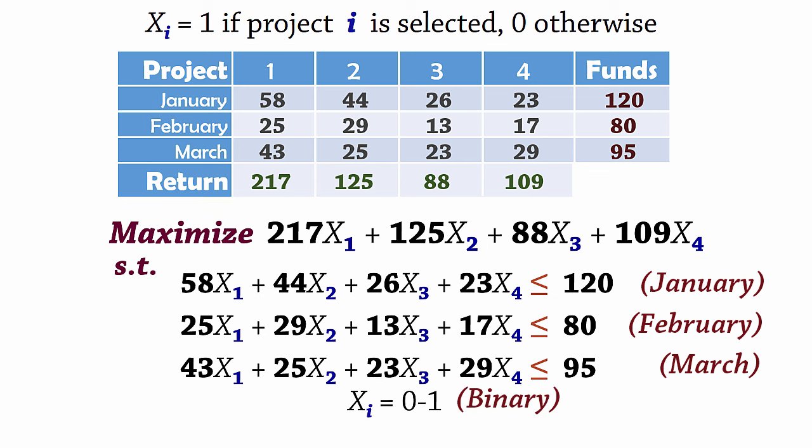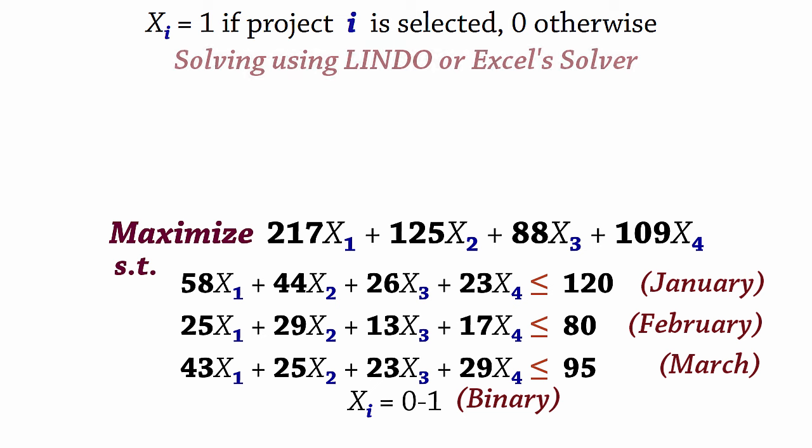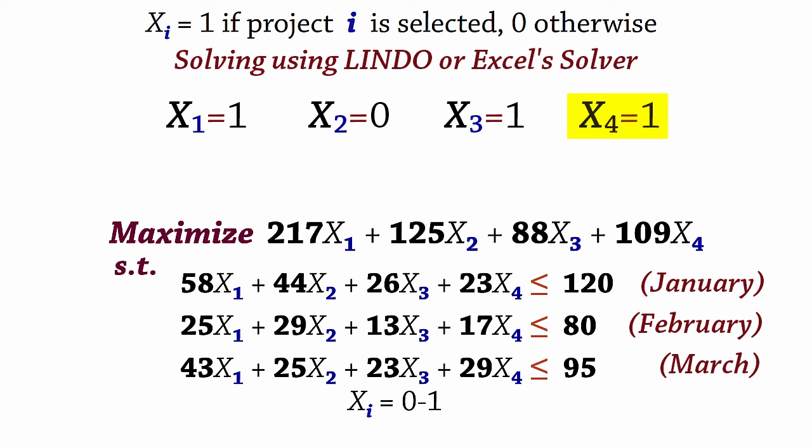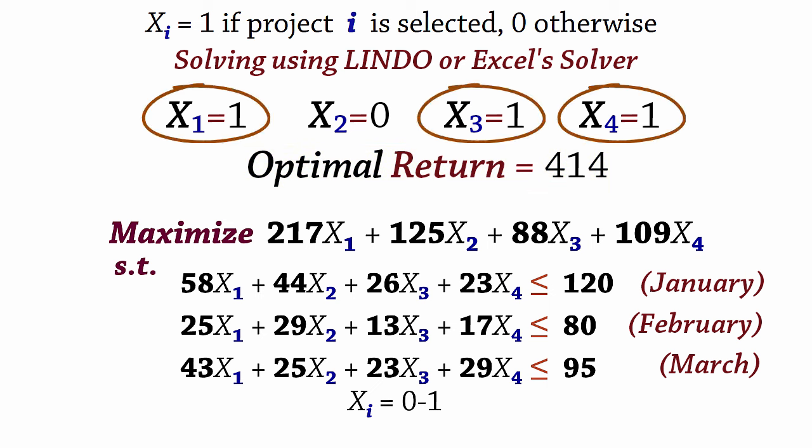Upon solving this model using software like LINDO or Excel solver, we find that the optimal solution is x1 equals 1, x2 equals 0, x3 equals 1, and x4 equals 1 with a corresponding net return of 414. That is, to maximize net return, undertake projects 1, 3 and 4 only.